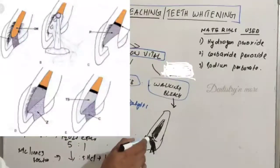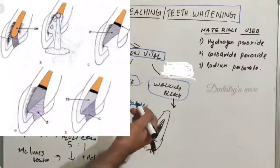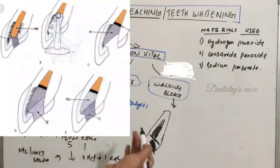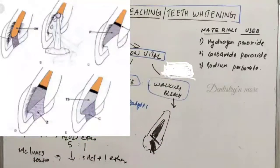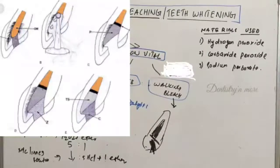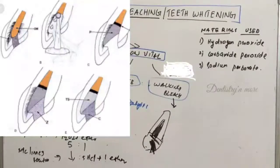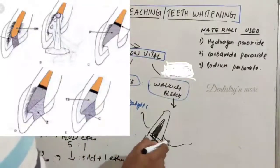Seal the orifice of the root canal with at least 1 mm of intra-coronal barrier material over the gutta-percha to prevent percolation of the bleaching agent into the apical area. GIC, MTA, or other materials can be used as the barrier — MTA is preferred. This barrier should be placed 1 mm incisal to the CEJ, and it is important to confine the bleaching agent to the crown of the tooth, above the level of the bone.